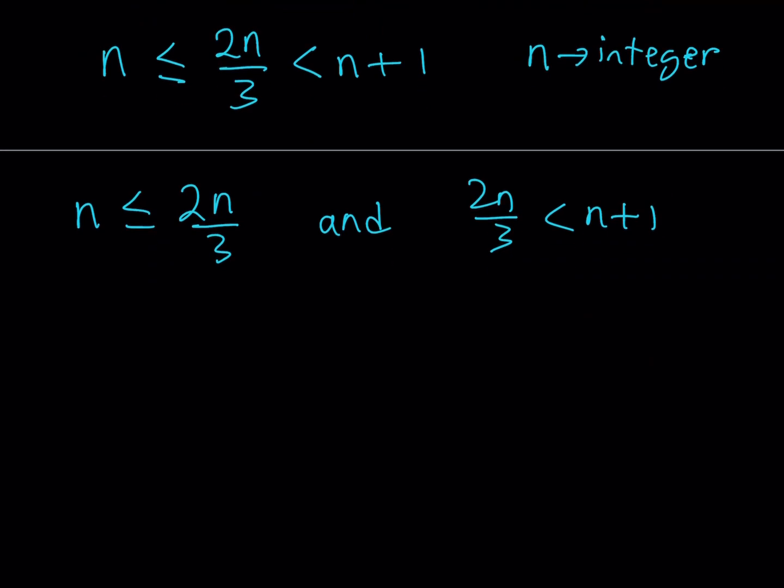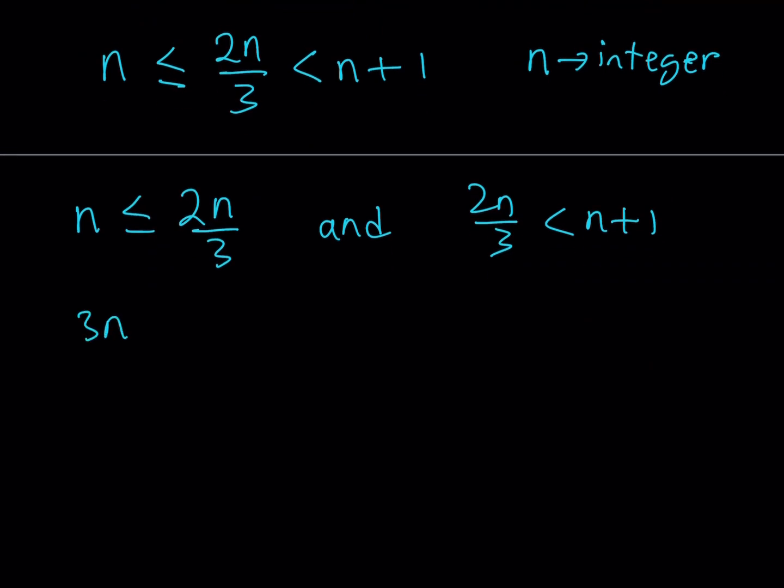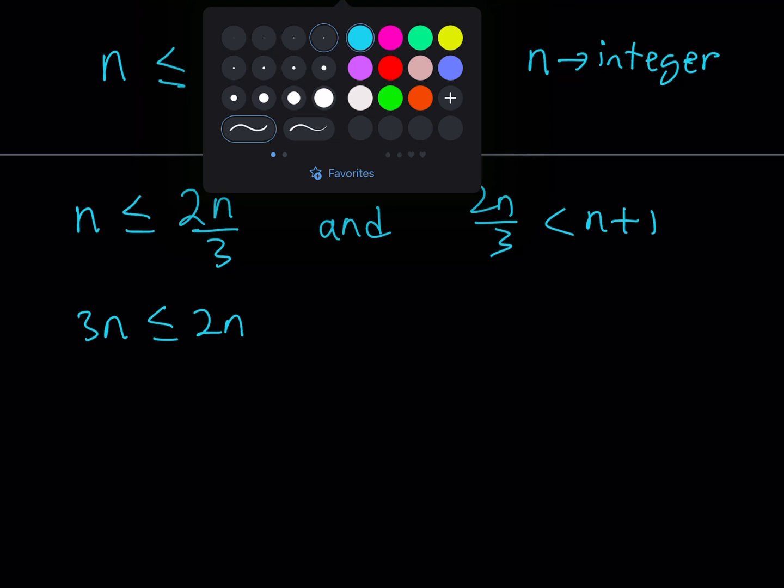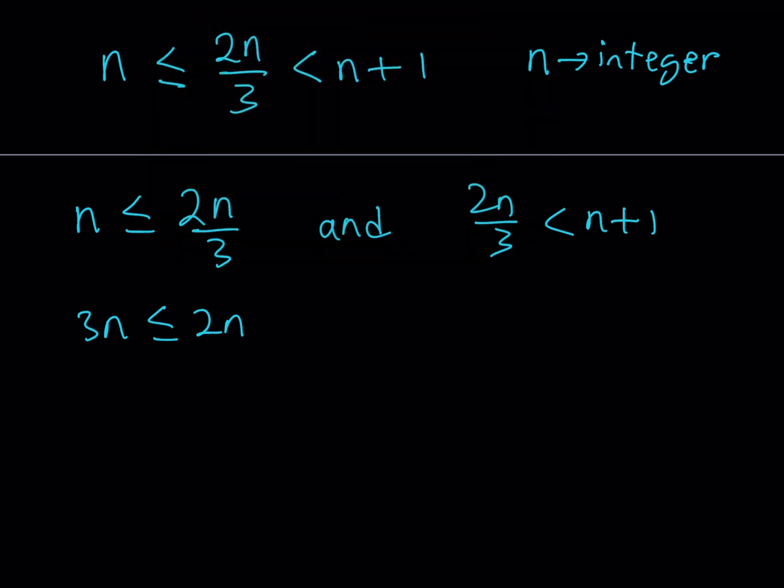Now, we can multiply both sides by 3 because 3 is a positive number. This gives me 3n is less than or equal to 2n. Now, at this point, don't make these kinds of mistakes because they're very critical. And obviously, they don't make sense at all. But sometimes people do that. Cross out the n's and we get 3 is less than or equal to 2, which is, of course, meaningless. We're not going to do that because we cannot just divide both sides by n, especially when n is negative or 0. So, here's what we're supposed to do. Put everything on the same side. So, I'm going to subtract 2n. And this should give me 3n minus 2n is less than or equal to 0, which means n is less than or equal to 0. So, that's one of the inequalities.